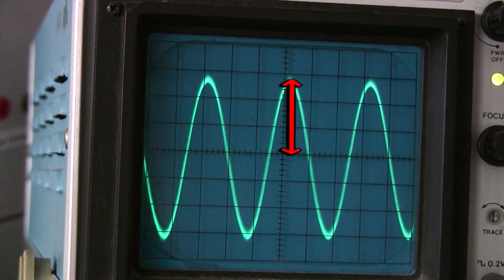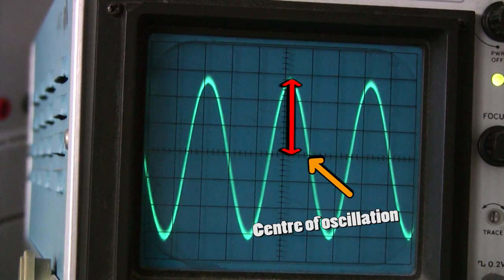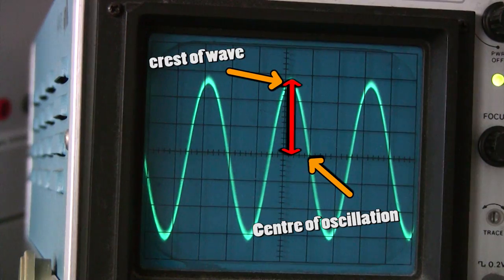The amplitude of a wave is always measured from the centre of oscillation to the peak or the crest of the wave. It's never measured from peak to peak. That's just plain wrong.